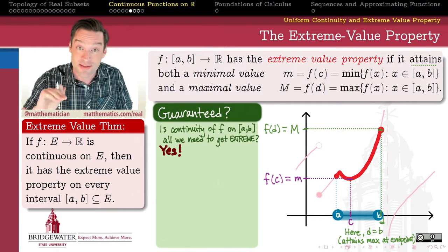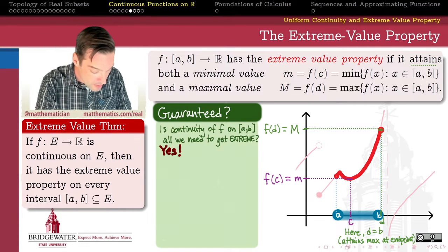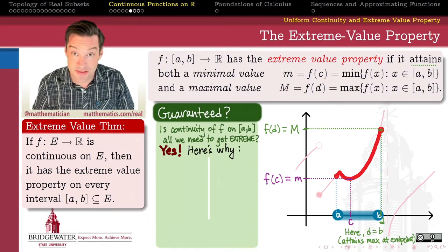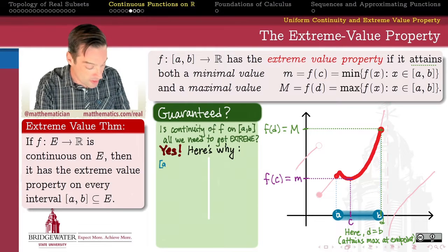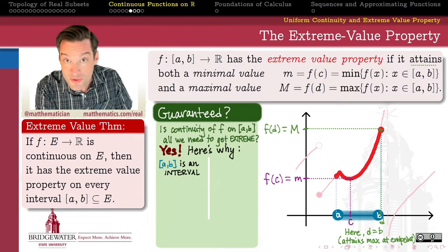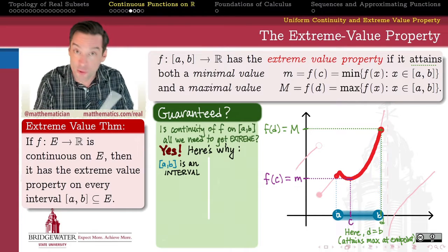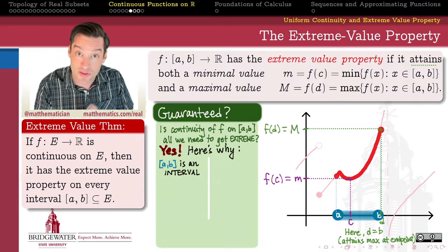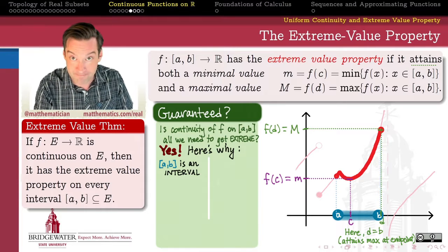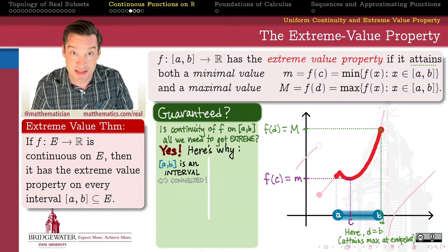All we need is continuity on the closed interval from a to b. So let's do our due diligence — why is this a sufficient set of criteria? There are two things about the closed interval from a to b that are important. The first is that it is an interval: for any two real numbers in that set, every number in between them is also in the set, which means — as we established a couple of videos ago — it is a connected subset of the real line.